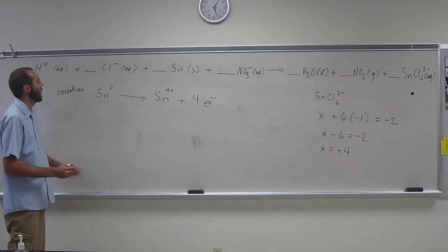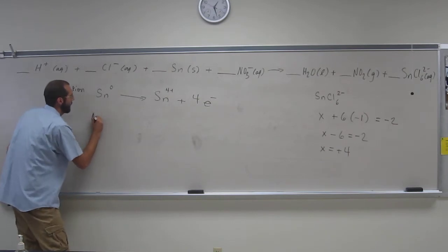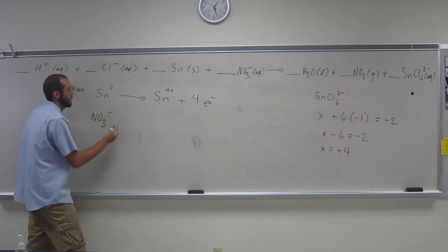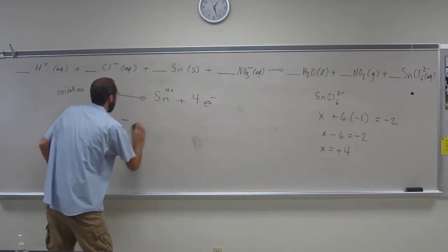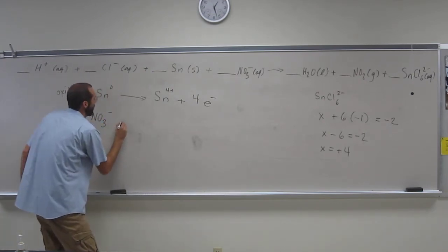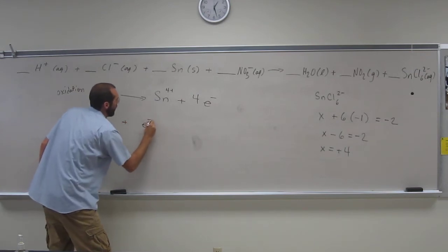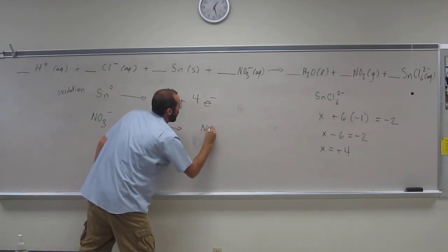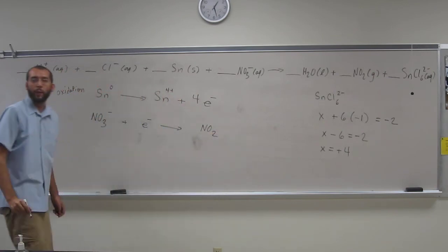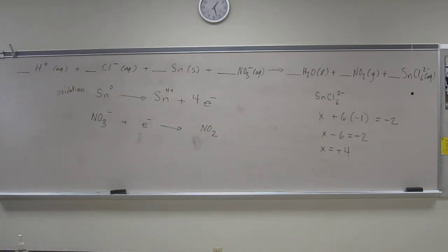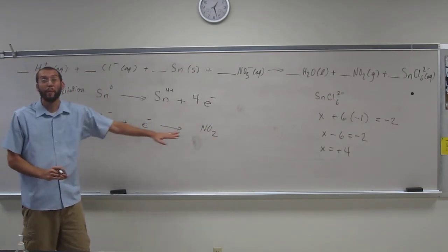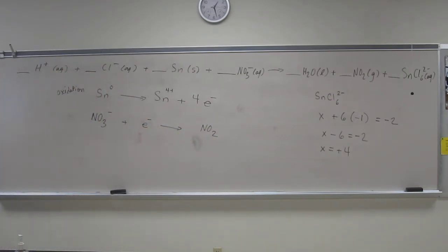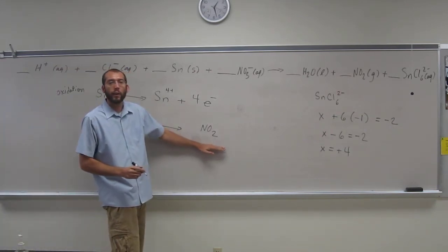So the other thing we noted was the NO3 minus, that's getting reduced, the nitrogen plus some amount of electrons goes to NO2. I'd like to keep it like this even though the oxygens will not be balanced. So how do we figure this out?